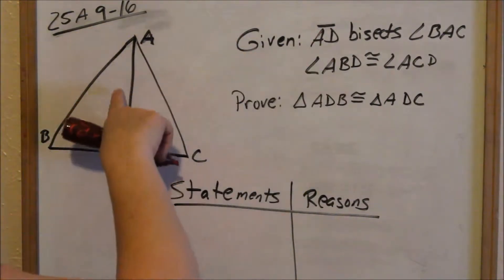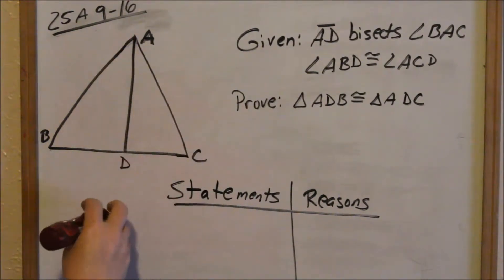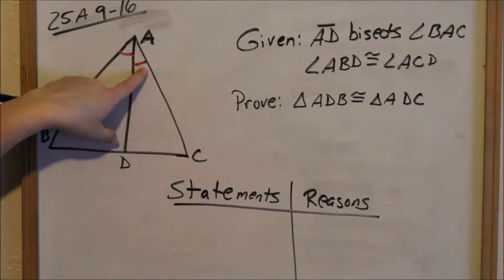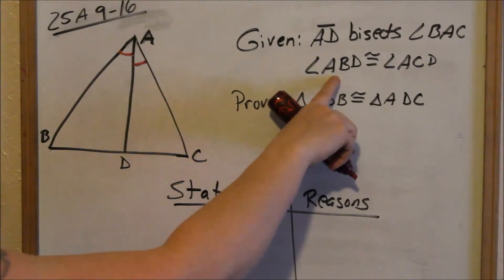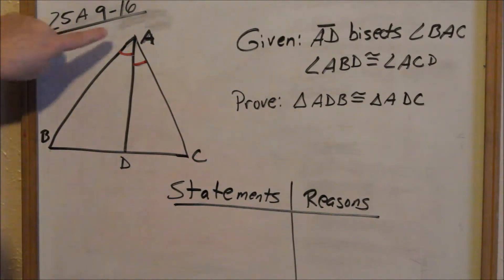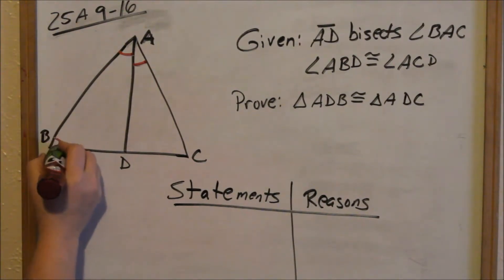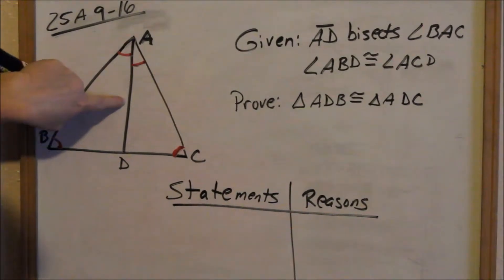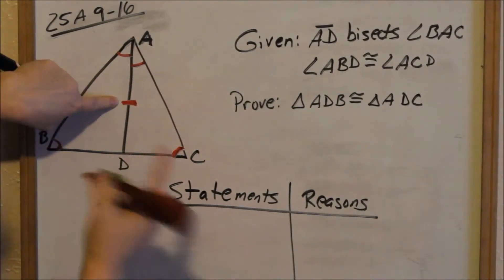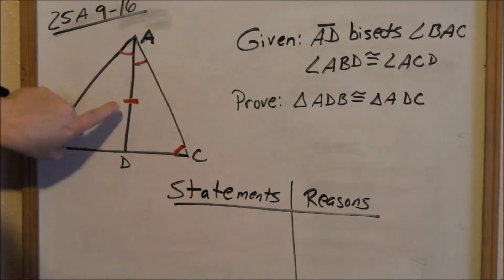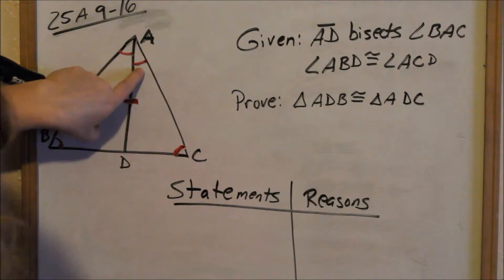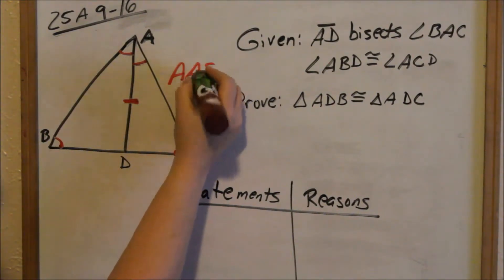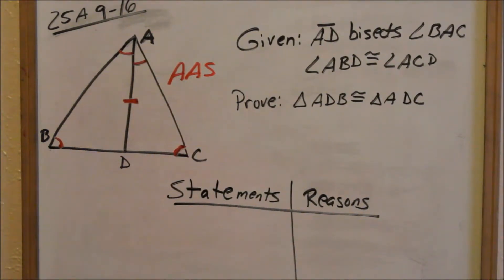Right now the only thing we can mark is the fact that AD bisects angle BAC — we shouldn't mark anything else except that. After we look at the givens, you want to mark your picture. AD bisects this angle, which means these two angles are congruent to each other. The next given is that angle ABD is congruent to angle ACD. And the other thing we know from our drawing is that this line is the same in both triangles, so it's congruent to itself by the reflexive property. Looking at one triangle, we can prove these two congruent by angle, angle, side, because our side is not in between the two angles.